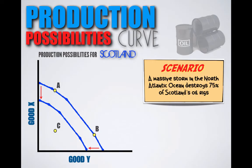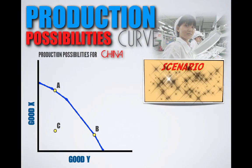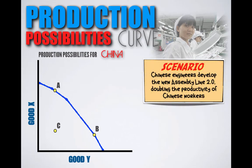Let's do another example. A PPC for China is provided. Let's say that Chinese engineers develop a new assembly line 2.0, doubling the productivity of Chinese workers. Now that workers in China are twice as productive, they can make twice as many goods, meaning that the production possibilities curve for China will shift outward and they will see an increase in their ability to produce.